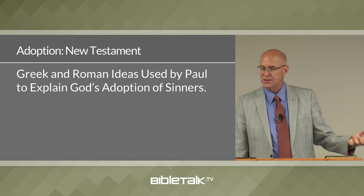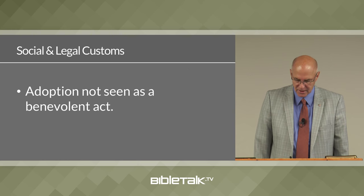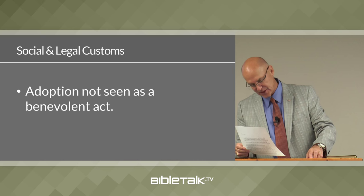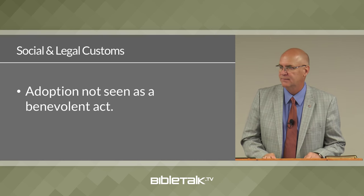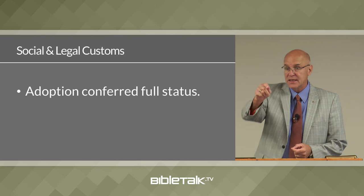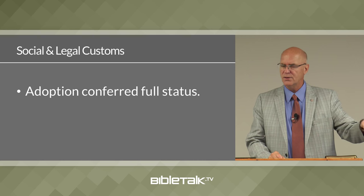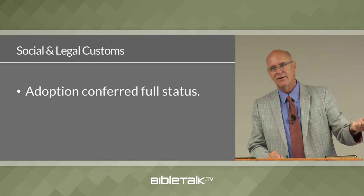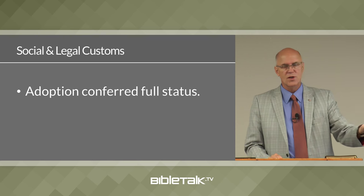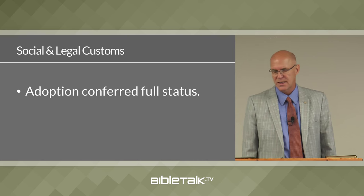Some of the social and legal perspectives and customs: in Roman and Greek societies, the father had absolute legal power over his children as well as his slaves, his wives, and his property. Secondly, adoption was not considered a benevolent act as it is today. Today we admire people who adopt children and think what a wonderful Christian thing to do. But in the Greek and Roman world, there was no benevolence attached to adopting.